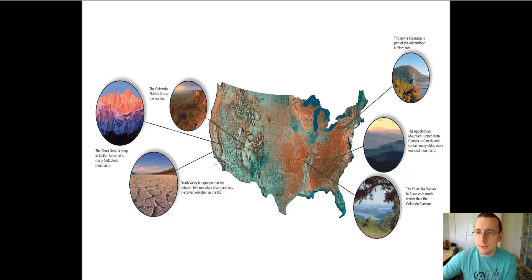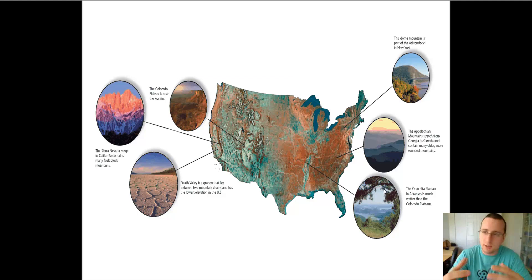When you think about the crust of the Earth, most people think of this flat surface. You imagine that globe you see in the classroom and you see this flat, smooth surface across the Earth. And then you see these satellite pictures and it looks like a sphere, a perfect sphere.